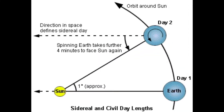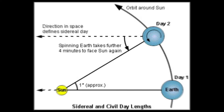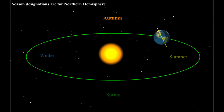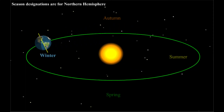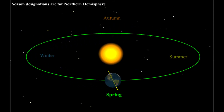An extra 3 minutes and 56 seconds is needed for the earth to rotate back to its same position as the day before. Also, while all this is going on, the earth has moved in its orbit around the sun.